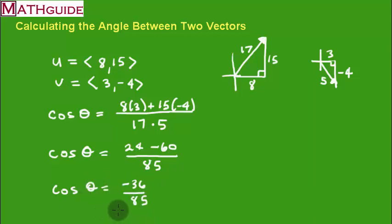Now that's as simple as I'm going to be able to get, and now what I like to do is get rid of the cosine. I like to get the theta, or in other words, the angle. So what do you do? Well, in this situation, to get rid of cosine, you do the inverse cosine. So I'm going to take the inverse cosine of negative 36 over 85. And if I do that, the calculator gives me an answer, and the calculator gives me 115.06 degrees. And there you go. There's the angle between the two vectors.